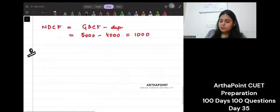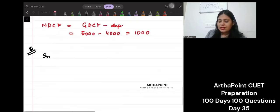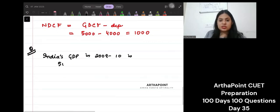It says suppose India's GDP in 2009-10 is 500,000 crore.